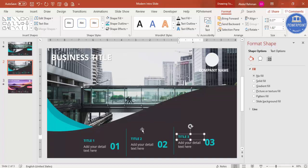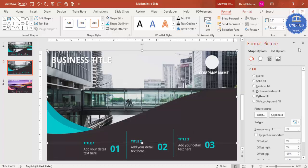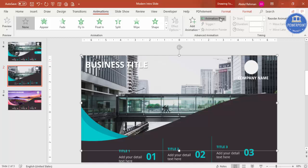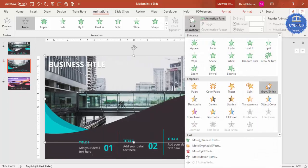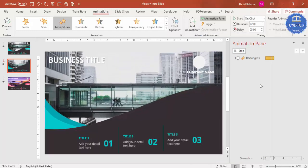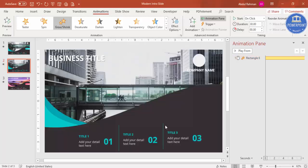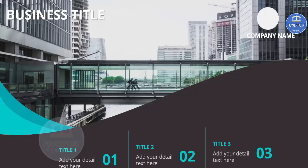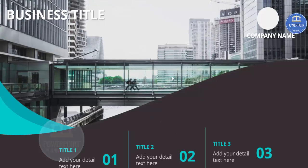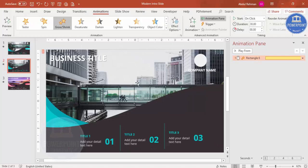To add animation to the image, select it, go to Animations, enable the Animation Pane, and click Add Animation. Select 'Grow/Shrink'. Double-click the animation entry and under Timing set it to Extremely Slow — you can even set it to 30 seconds. Click OK. When you play the slide and click, you can see the image slowly zooming in. You can use any image of your choice and change the colors to suit your title slide.